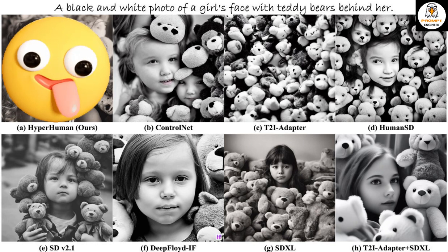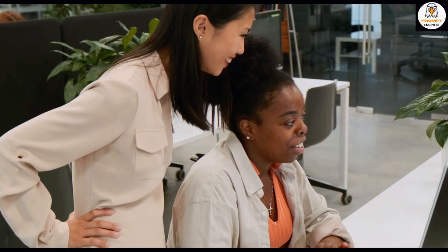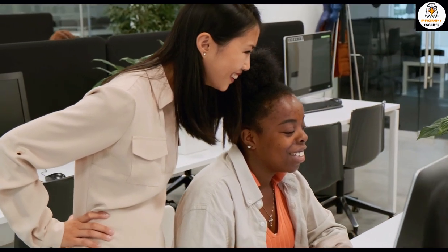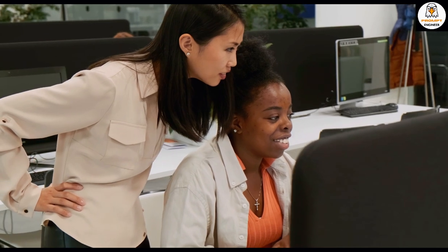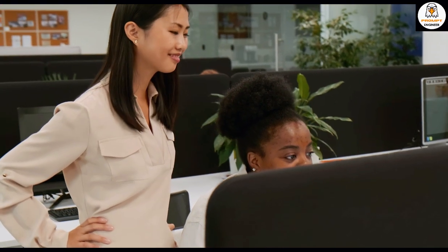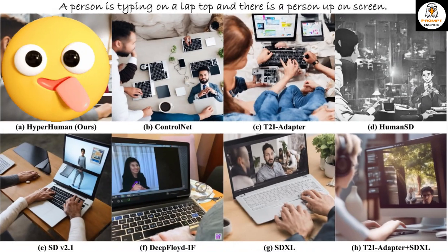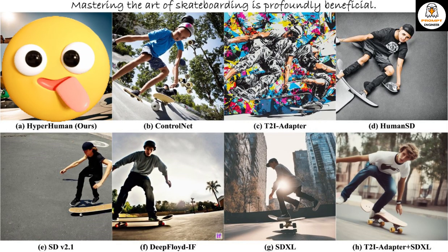Generating high quality images from text description is a challenging task. It requires a deep understanding of the underlying meanings of the text and the ability to generate an image consistent with that meaning. In recent years, diffusion models have emerged as a powerful tool for addressing this problem and they have mostly very well succeeded.